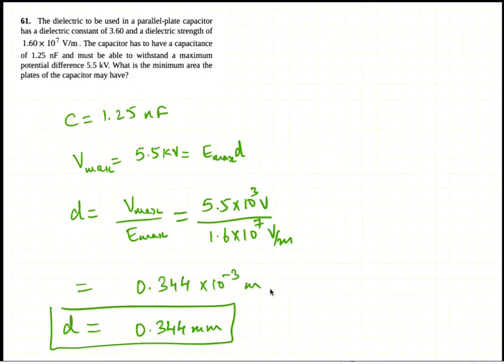And since the capacitance is given by kappa epsilon naught A by D, so the area of the plate needs to be D times C divided by kappa epsilon naught.